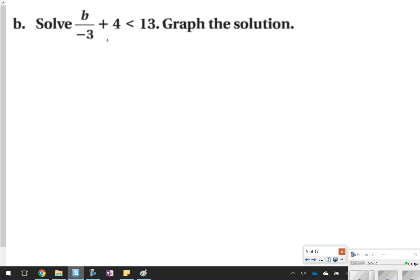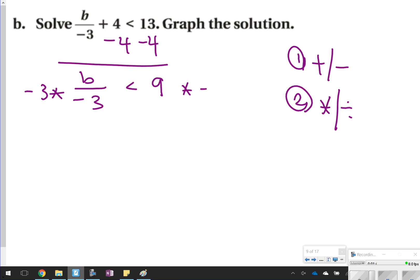This one, again, seeing I have addition or subtraction first, and then multiplication or division. Subtract 4 from both sides. I'm going to get 9 less than b over negative 3. I see division, so now I'm going to use multiplication to solve. Remember, when you're multiplying or dividing by a negative number, you need to flip the sign. So less than becomes greater than, and so these 3's will cancel out. So b is greater than negative 27. Be careful with these, because you will see some later on.